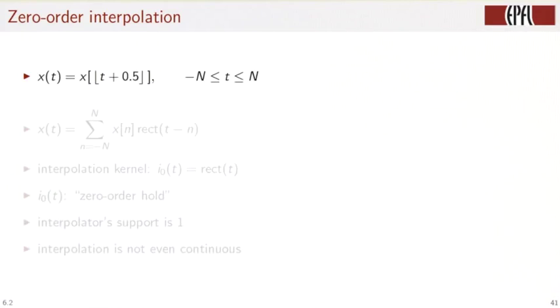What are the characteristics of this zeroth order interpolation? x of t is given by this formula. You take the index t plus one half and the floor function that indicates which sample you use for the piecewise constant interpolation. So x of t is simply written as a linear combination of xn times rect of t minus n.